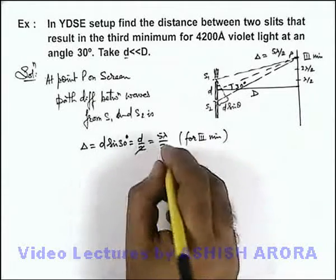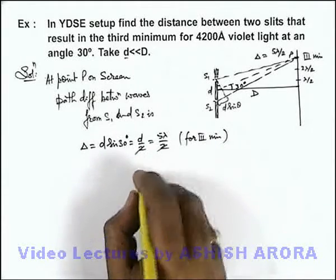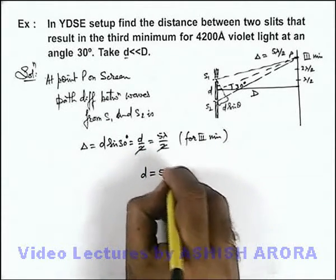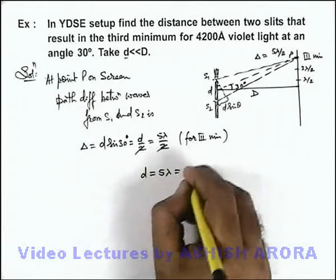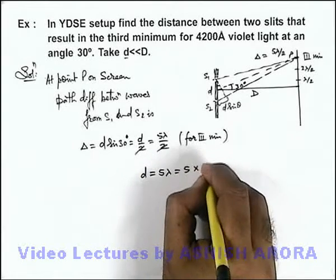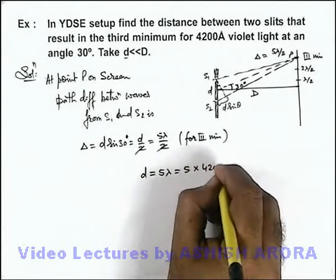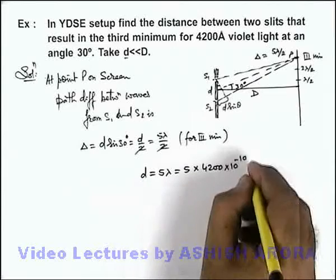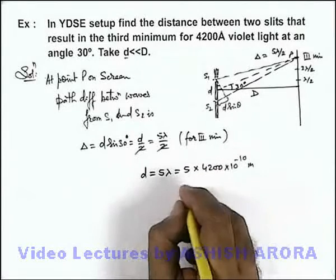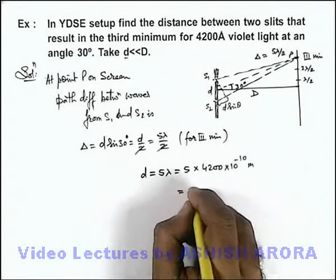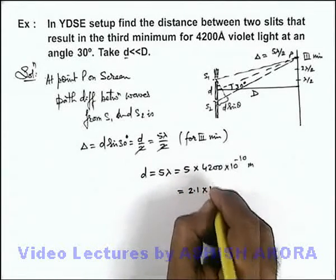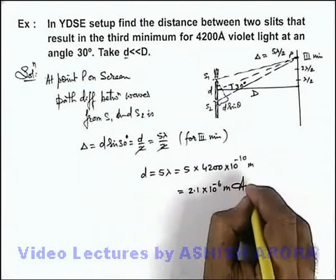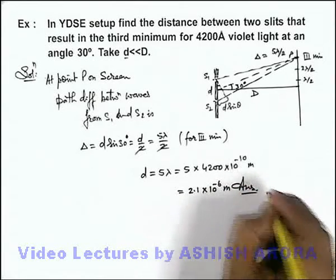In this situation, the 2 cancels out and the value of slit separation we get is 5λ, that is 5 multiplied by 4200 × 10⁻¹⁰ meters. On simplifying, we get 2.1 × 10⁻⁶ meters, which is the answer to this problem.